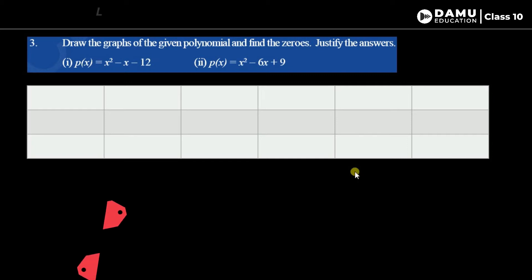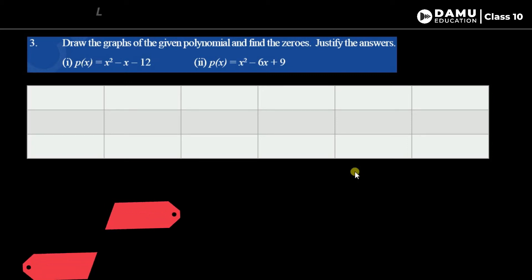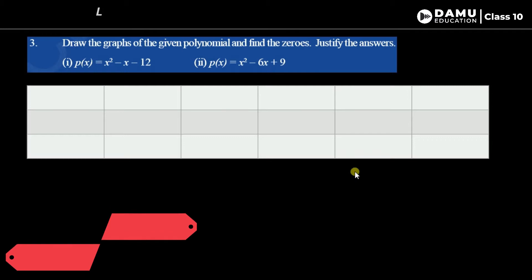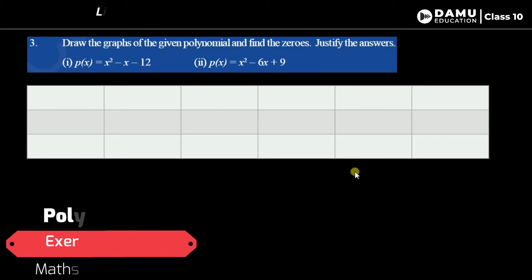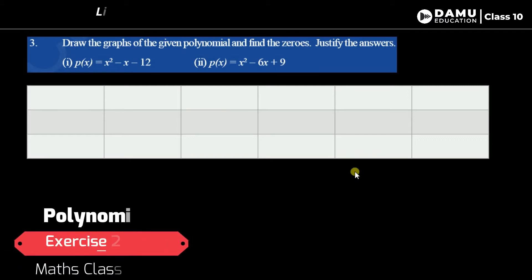Hello friends, welcome to the Homo education. If not yet subscribed, please subscribe and click the bell icon. So in this module, we are going to discuss our third question: Draw the graphs of the given polynomial and find the zeros. Justify your answer.